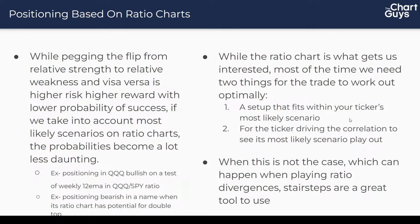While the ratio chart is what gets us interested, most of the time we need two things for the trade to work out optimally: a setup that fits within your ticker's most likely scenario, and the ticker driving the correlation to see its most likely scenario play out. You can't just see the ratio coming down to the daily 12 EMA and yolo into it. You see the ratio at the daily 12 EMA, then zoom in to the name you're actually trading and ask: do I have a stair step, an inverse head and shoulders, a tightening range? That's what you base your risk on.